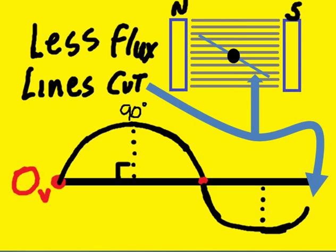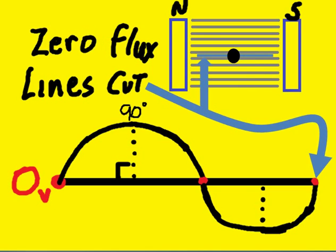45 more degrees counterclockwise, and less flux lines are cut, less voltage is induced. Finally, zero flux lines are cut and zero voltage is induced.